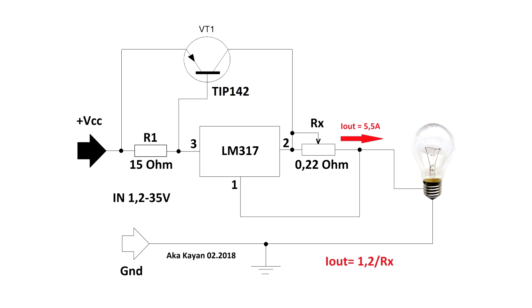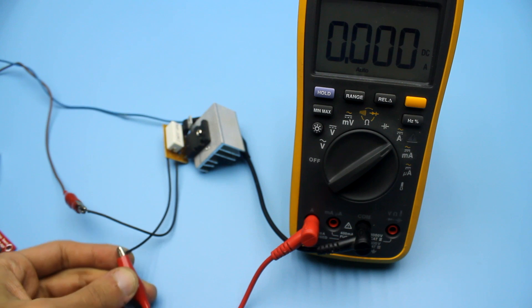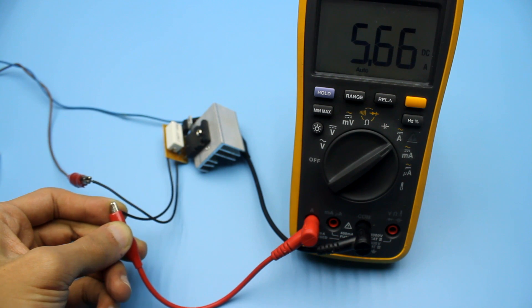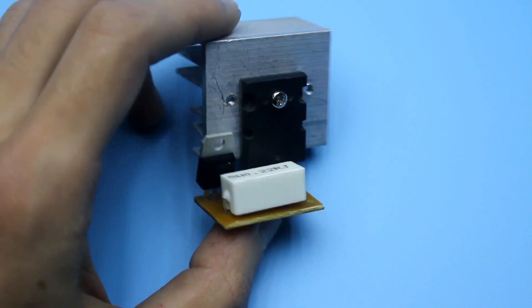The maximum acceptable current for the microchip LM317 is 1.5A. You can increase it with an additional power transistor. In this case, the chip will already be in control mode, so it will not heat up. Instead, the transistor will heat up.